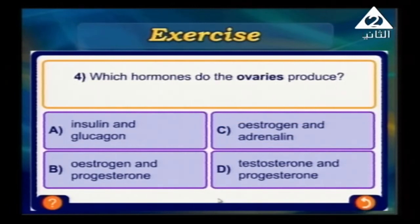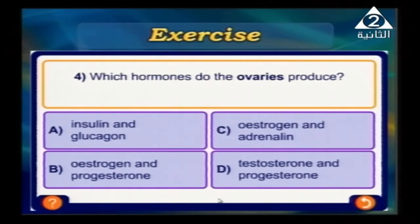Which hormones do the ovaries produce? Insulin and glucagon are out — those come from the pancreas. Estrogen and adrenaline is wrong. The correct answer is estrogen and progesterone, because these two hormones are responsible for pregnancy and labor. I hope you enjoyed your time with us — this is your information about hormones, their functions, and feedback mechanisms. Study well, answer the book questions, and goodbye everybody!